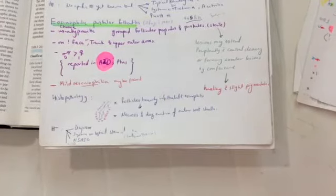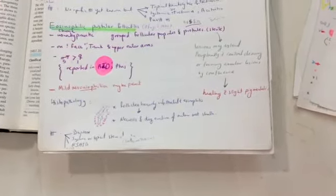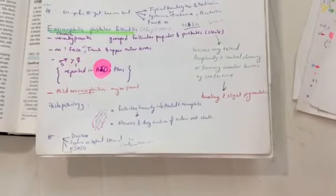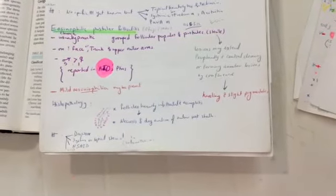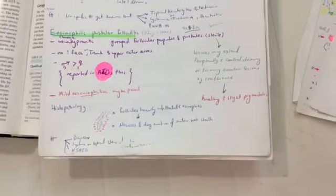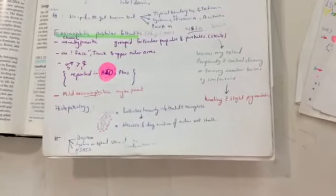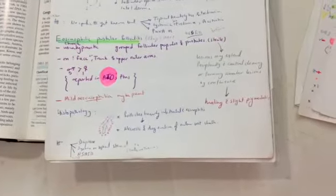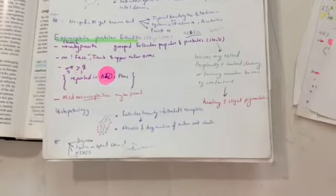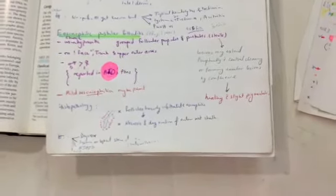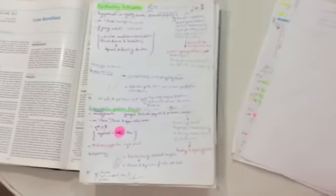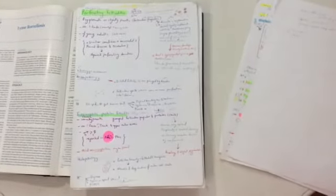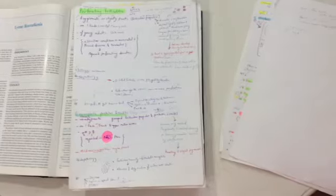Histopathology: follicles heavily infiltrated with eosinophils and necrosis, leading to necrosis and degeneration of the outer root sheath. Treatment by Dapsone, systemic steroid or topical steroid, and non-steroidal anti-inflammatory drugs. So this is the two types of folliculitis: perforating folliculitis and eosinophilic pustular folliculitis.